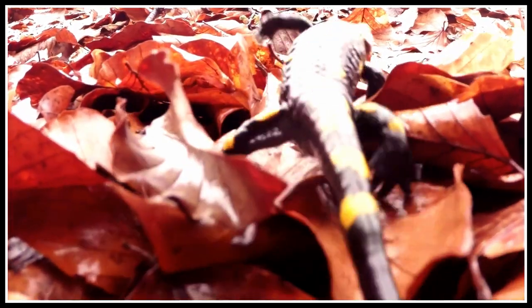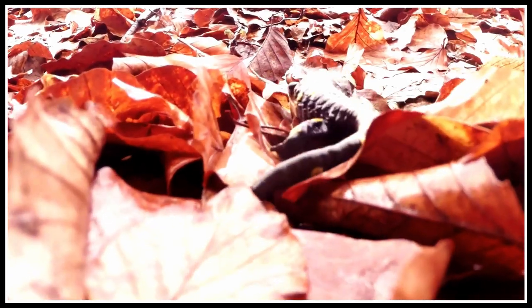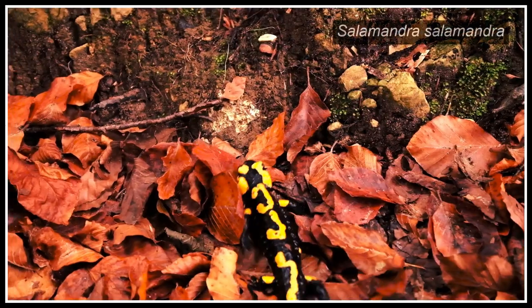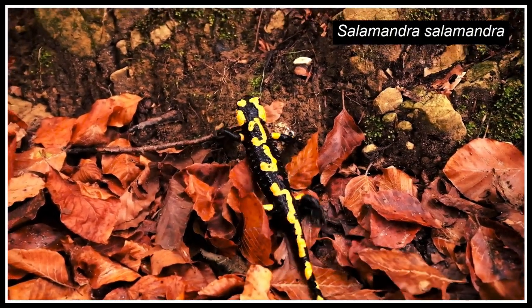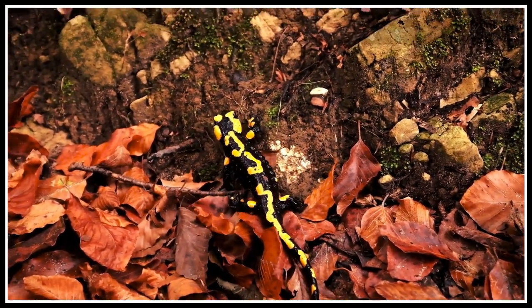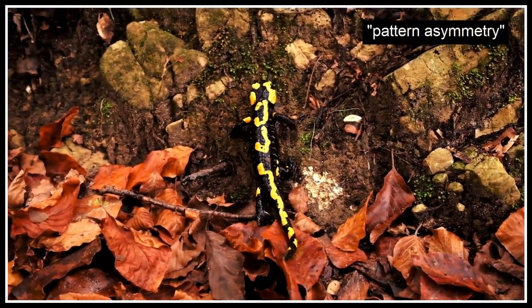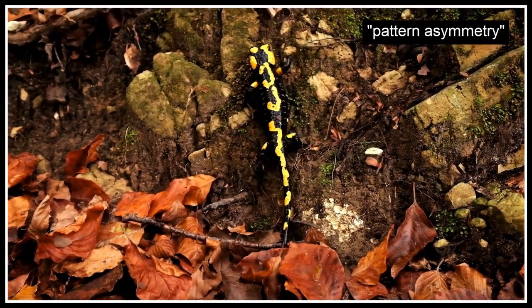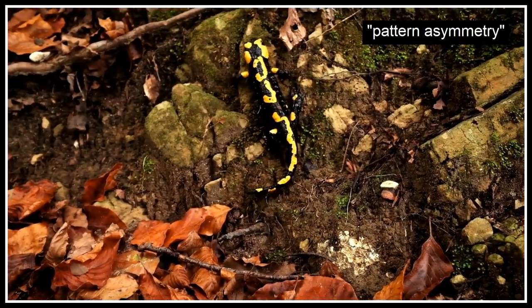An animal with a symmetrical exterior form can still have an asymmetrical appearance. The fire salamander is a clear example of an animal with asymmetrical patterning. It's likely that this patterning helps to break up the outline of the animal in the eyes of potential predators.